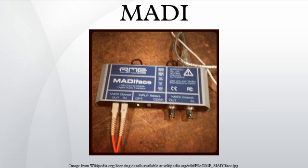MADI links use a transmission format similar to fiber distributed data interface networking, which was popular in the mid-90s for backbone links between LAN segments. Since MADI is most often transmitted on copper links via 75-ohm coaxial cables, it more closely compares to the FDDI specification for copper-based links, called CDDI. AES-10-2003 recommends using BNC connectors with coaxial cables and ST connectors with optic fibers. The specifications about fibers can provide a range of up to 2 kilometers.